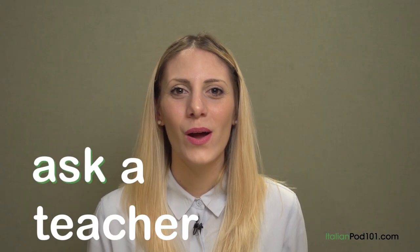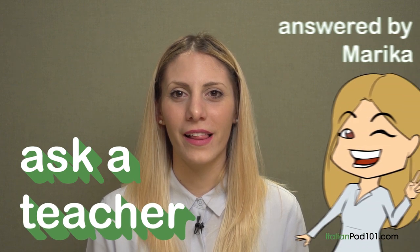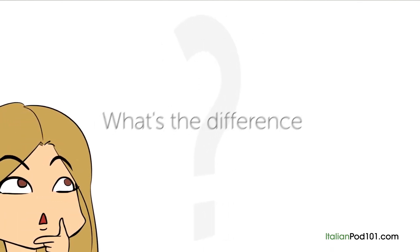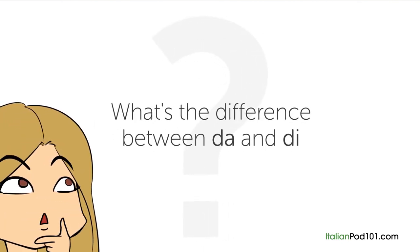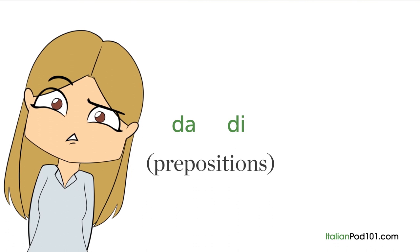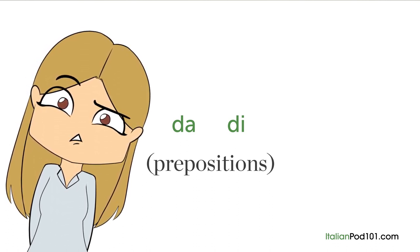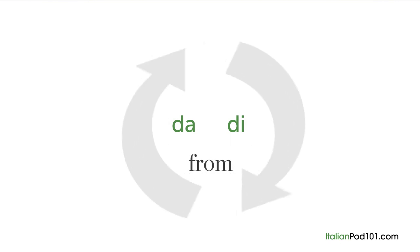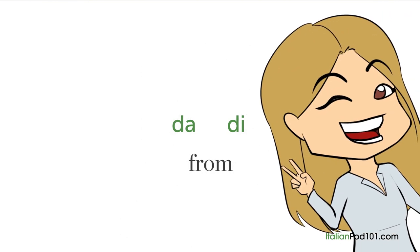Hi everybody, Marika here. Welcome to Ask a Teacher. The question for this lesson is: what's the difference between DA and DI? DA and DI are two Italian prepositions. They have multiple functions and meanings, and sometimes it's not easy to choose the right one. Both DA and DI can be translated as 'from,' but they are not interchangeable.